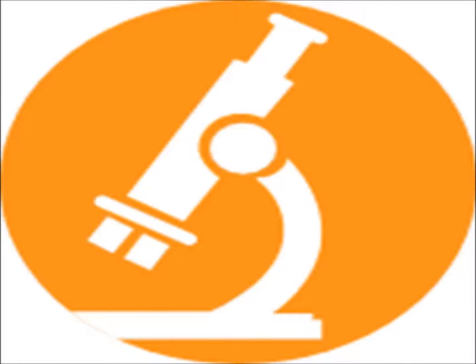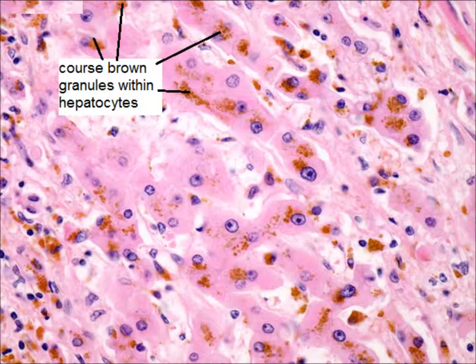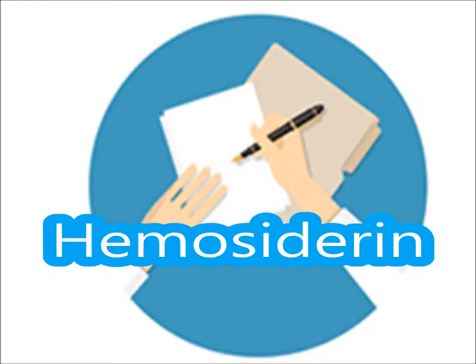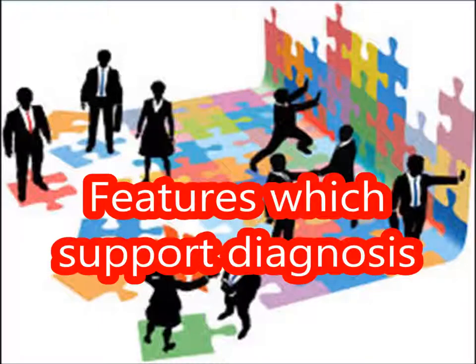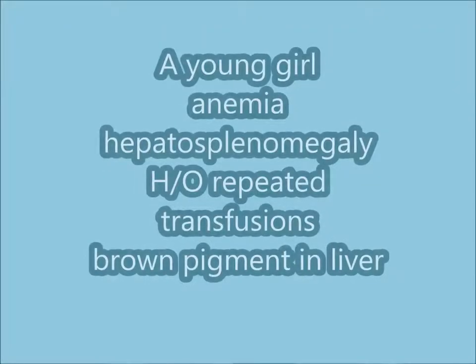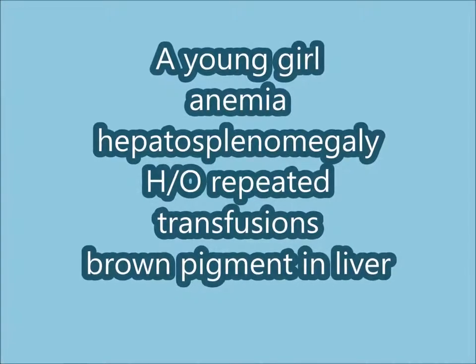On microscopic examination of the liver, as you can see in this picture, there is presence of brown granules within the hepatocytes. In the assessment: the colored substance in the liver is hemosiderin. Features which support the diagnosis of hemosiderosis are: a young girl with congenital anemia, hepatosplenomegaly, history of repeated transfusions, and brown pigment in the liver.